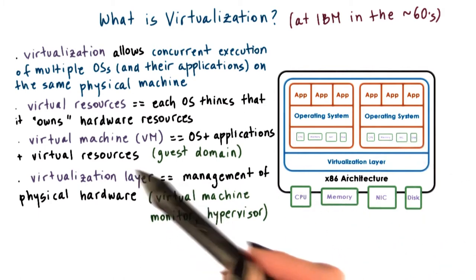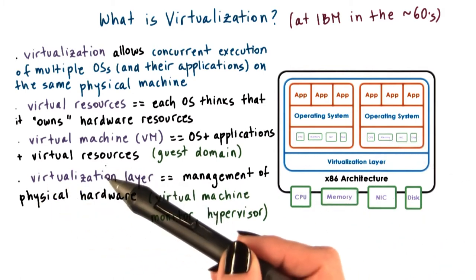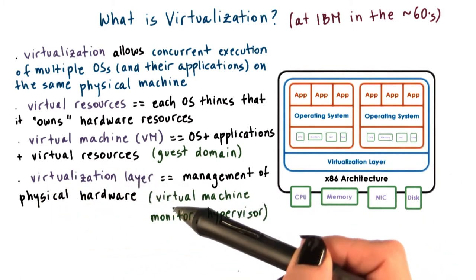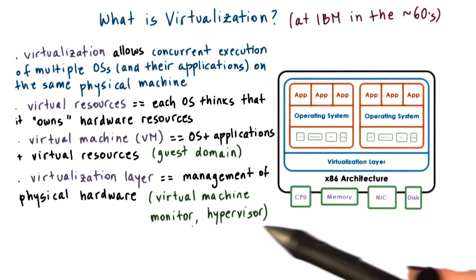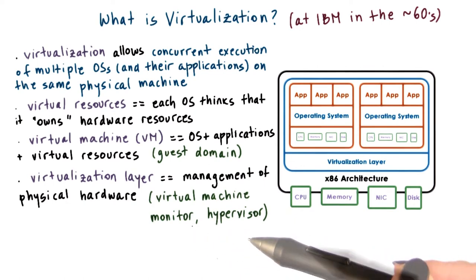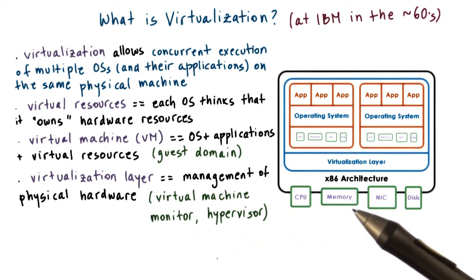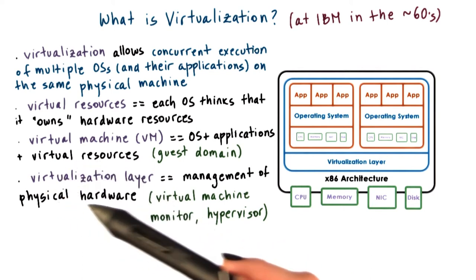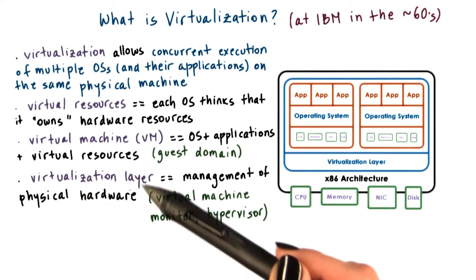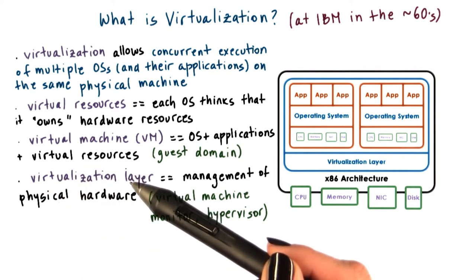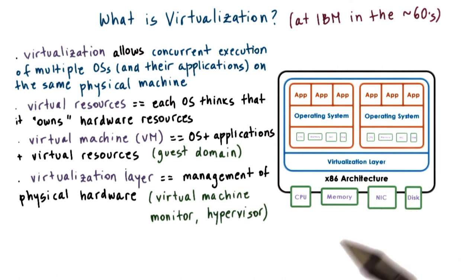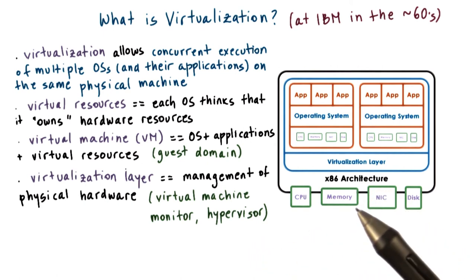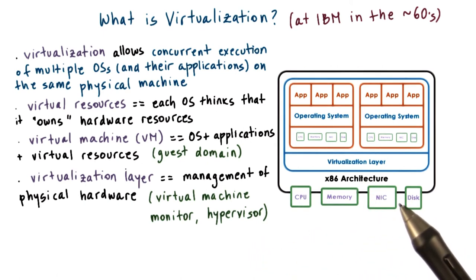This is provided by the virtualization layer that is referred to as virtual machine monitor, or hypervisor. There are multiple ways in which the functionality required by the virtualization layer can be designed and implemented, and in this lesson we will describe some of the key virtualization-related techniques.